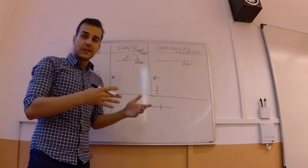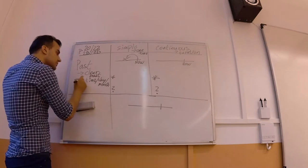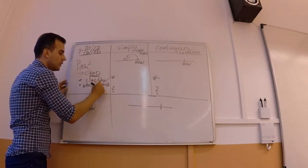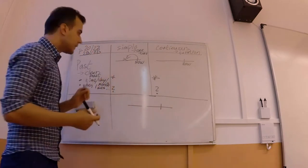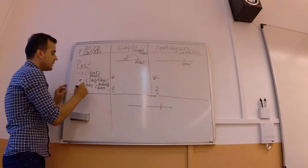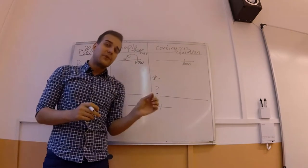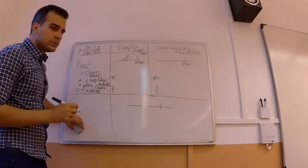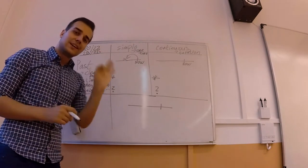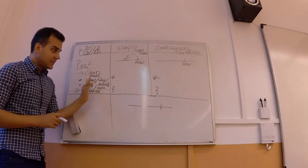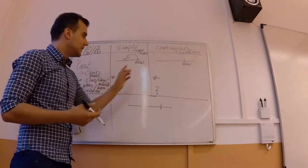We can make the past clear using many different methods. For example, we can say when it happened inside the sentence — it can be the time, day, month, or year. You could also say 'when I was.' We can also make the past clear by saying that the action is finished, which means everything on this line is done and there is no effect on today.